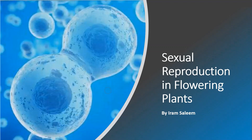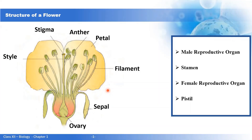A flower has four whorls: calyx represented by sepals, corolla represented by petals, androecium comprising stamens, and gynoecium made up of pistils. A flower can be unisexual or bisexual. A unisexual flower can be pistillate — having only the female reproductive organ — or staminate — having only the stamens. In a bisexual flower, the stamen is made up of filament and anther, and the pistil comprises ovary, style, and stigma.